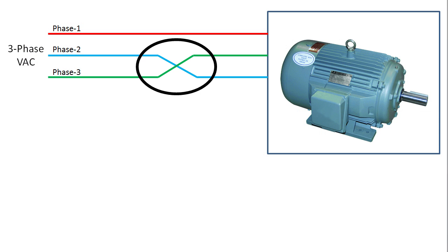To reverse a three phase motor you just swap any two power leads and the motor will run in the opposite direction.